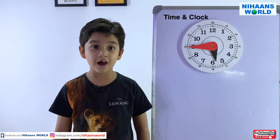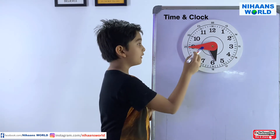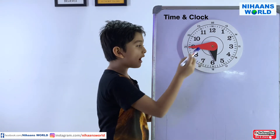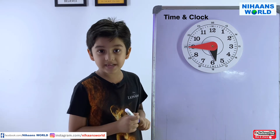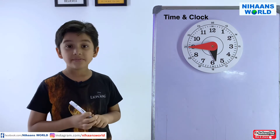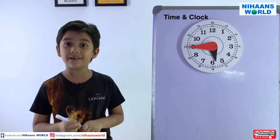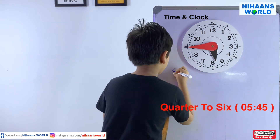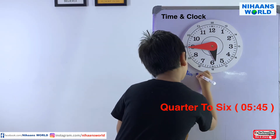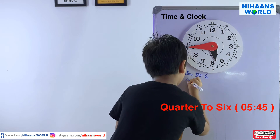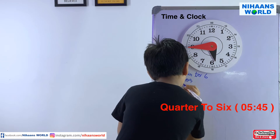Friends, now let us see a quarter to example. If the minute hand is at 9 and the short hand is between 5 and 6, what is the time? The time is quarter to 6 or we can write it as 5:45.